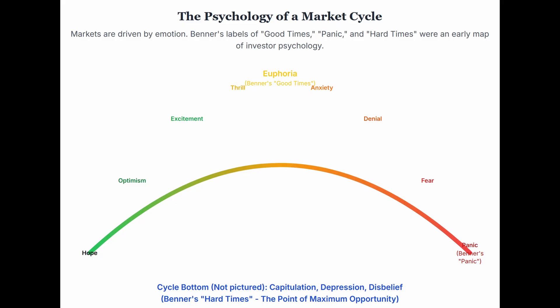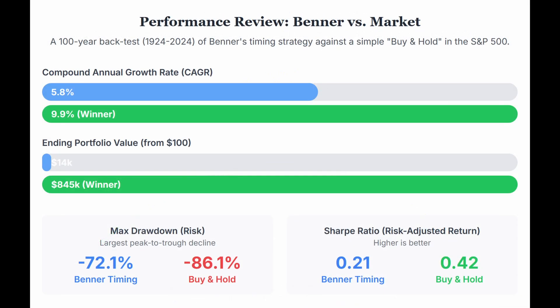If the chart seems to work today, it can't be because of Benner's original reason — that link is broken. If there's any alignment now, it suggests maybe it's tapping into something more timeless, like human psychology and crowd behavior — the rhythm of collective human sentiment that might persist even when the economic structure changes. That's the key insight going into our empirical test.